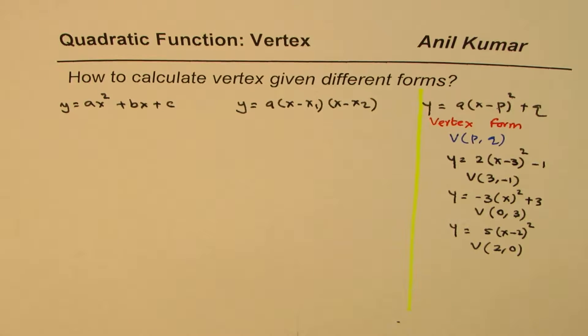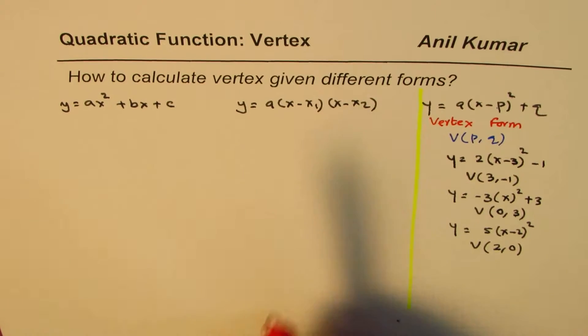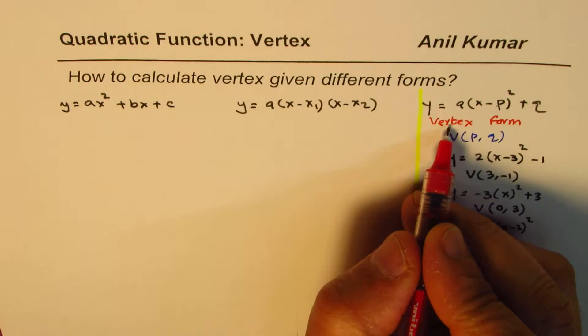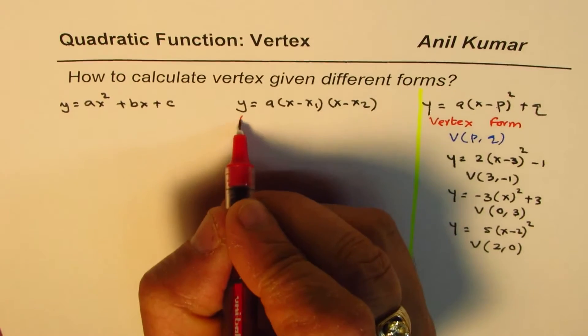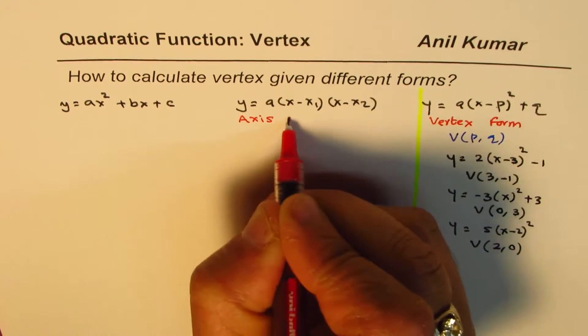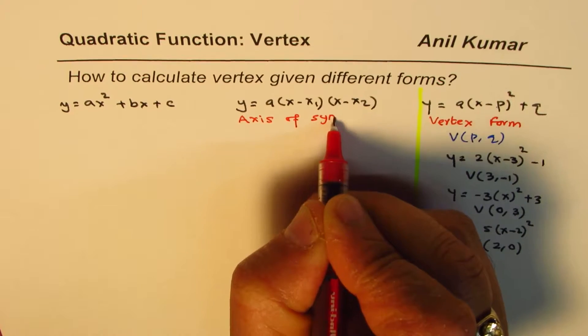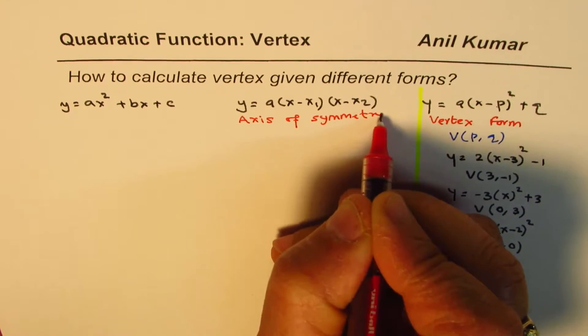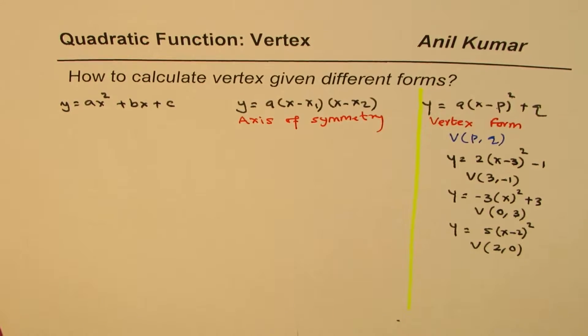Now let's take the factored form. In factored form what happens is we have to look for vertex, which is always on axis of symmetry. So we have to look for axis of symmetry.